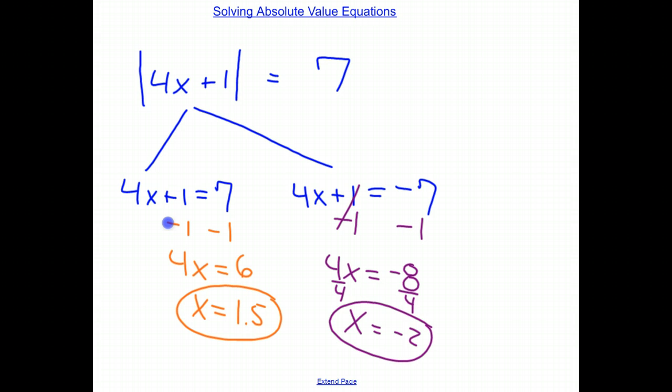So here, if I were to plug negative 2 in for x, and I will just show you this quickly on the side, I have 4 times negative 2 plus 1. I can plug this in. I have negative 8 plus 1. And now I have the absolute value of negative 7 equals 7, which of course is what we were looking for.